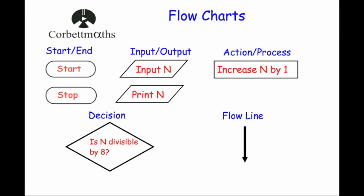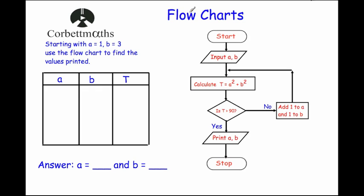Let's look at our first example. Starting with a = 1 and b = 3, use the flowchart to find the values printed. So we start, then input a and b. Next, calculate t = a² + b². We square a which is 1, and square b which is 3 to get 9, then add them together to get t = 10.